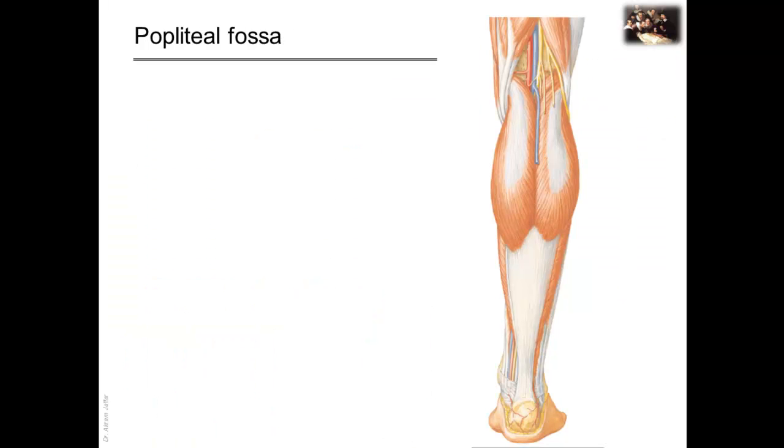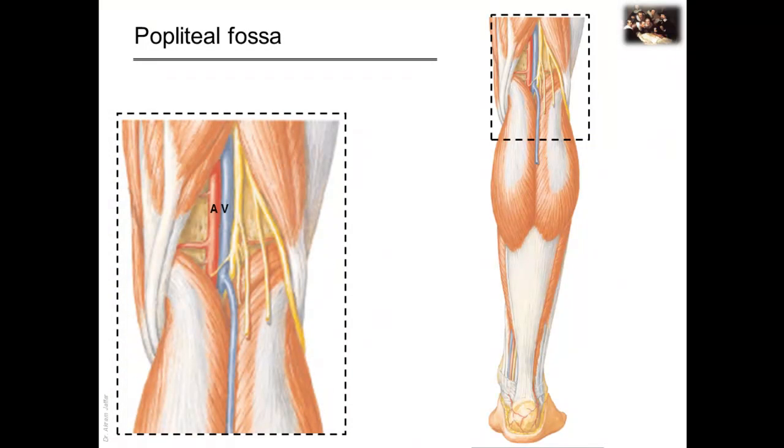The second area of transition is the popliteal fossa, and this corresponds to the cubital fossa, but is located posterior to the knee. It's a diamond-shaped region formed by muscles of the thigh and leg. Major vessels and nerves pass between the thigh and leg through the popliteal fossa. The fossa has a thick fascial roof and is filled with fat.